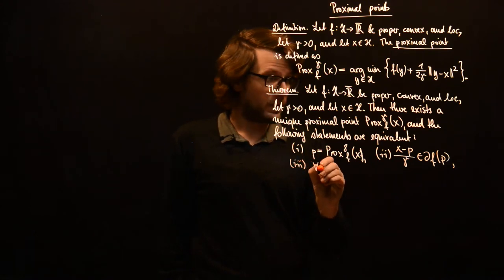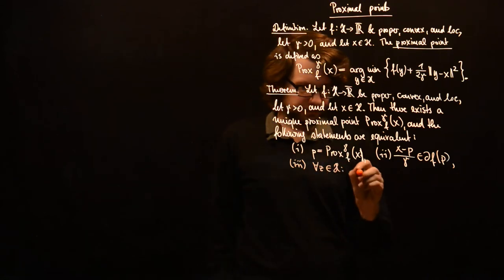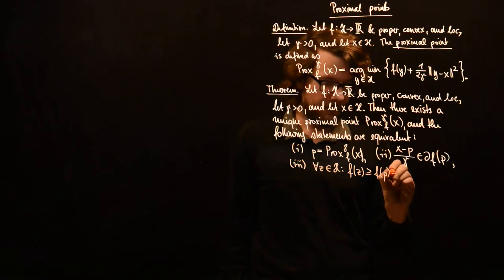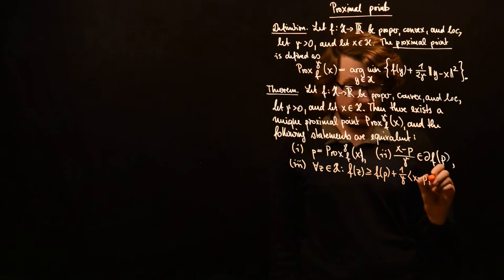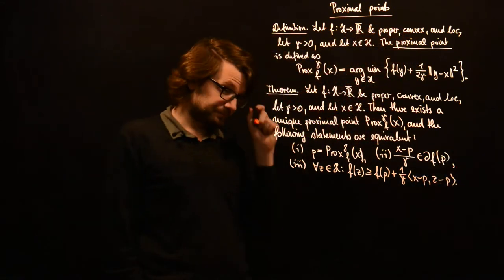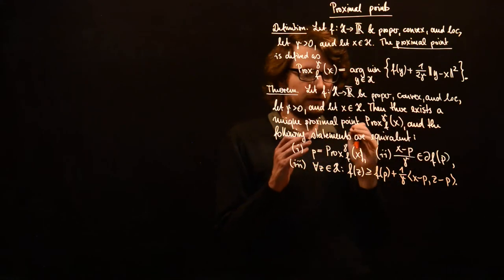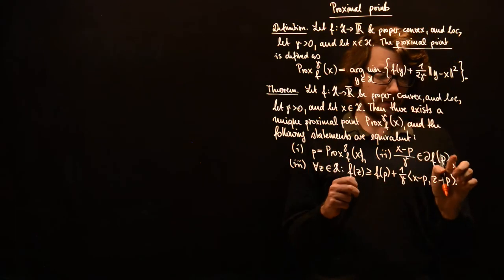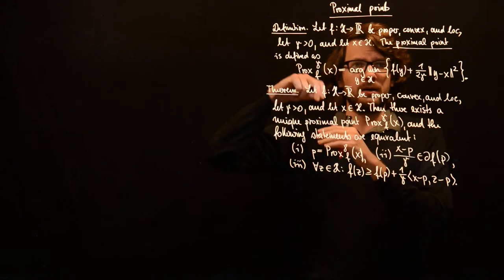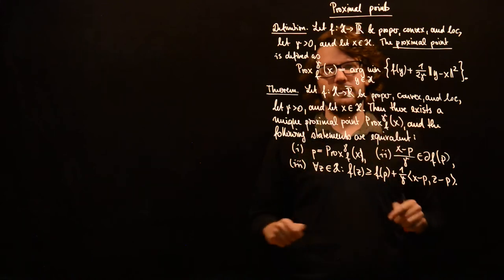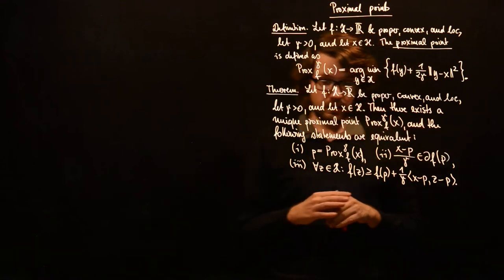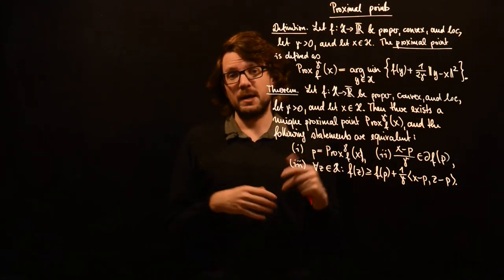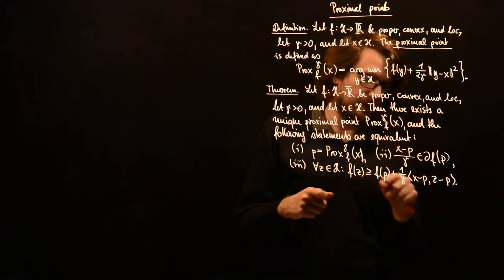Third statement: for all z in H, f(z) is greater or equal than f(p) plus (1/gamma) times the inner product of (x minus p) with (z minus p). So whenever we evaluate a proximal point, we get some subgradient at the resulting point p — not at the point x where we evaluate the proximal point, but at p. And we also have this nice inequality, which is very similar to the inequalities we saw in the last video, giving a relation between function values.